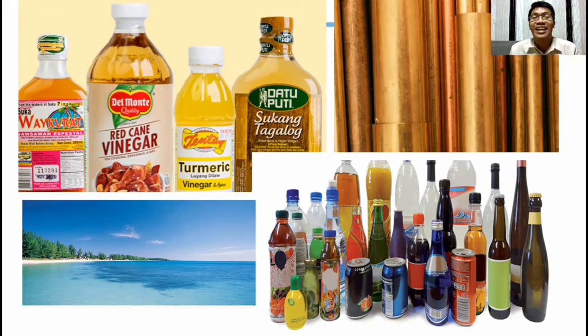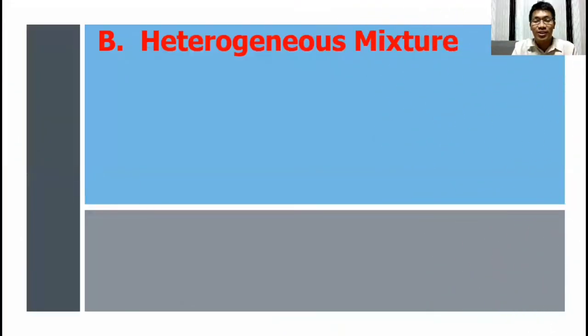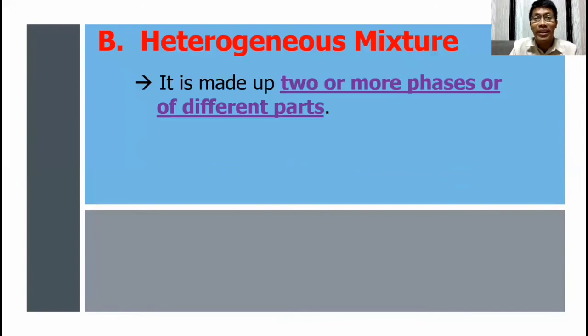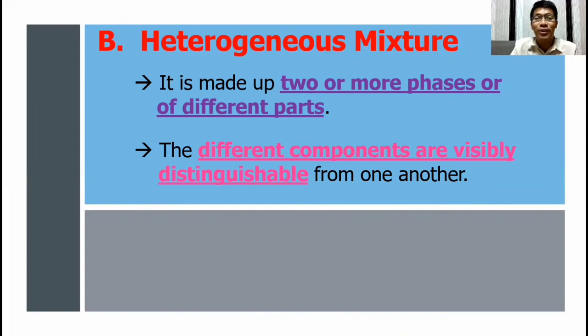The next type of mixture is what we call heterogeneous mixture. And this type of mixture is made up of two or more phases or of different parts. Also, its different components are visibly distinguishable from one another. Kung ikukumpara natin ito sa homogeneous mixture, alam naman natin or natutunan natin na hindi natin kayang makita or madistinguish kung alin yung mga components na meron sa homogeneous mixture. Best example of which is the solution. Dahil nga, meron lang itong single phase. Pero in heterogeneous mixture, kaya natin makita kung ilan yung components niya at kung ano-ano ang meron sa kanya.